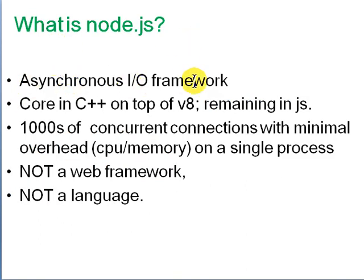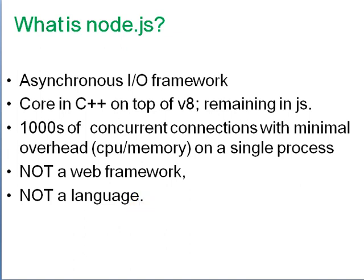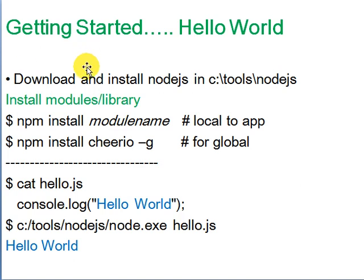Node.js is essentially an asynchronous I/O package. The core engine is C++, built on top of V8, and the rest is JavaScript. It can handle thousands of concurrent connections with minimal CPU overhead and memory usage. It is not a web framework and not a language, but it is based on JavaScript.